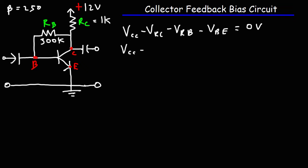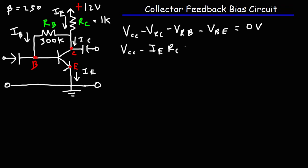The current flowing through the collector is IC, and the current flowing through RB into the base is IB. The sum of IB and IC equals the emitter current IE. Note that the current flowing through RC is the sum of IB and IC, which is technically IE. So VRC equals IE times RC, VRB equals IB times RB, and VBE is 0.7 volts.